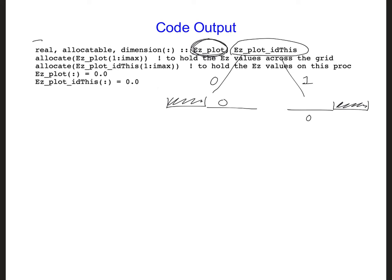First we need to create the arrays and here is some code that we can use to do that. First we allocate, or make them allocatable, we give them a dimension of 1. Then we give them their size, 1 to IMAX for both, and we're initializing both to 0.